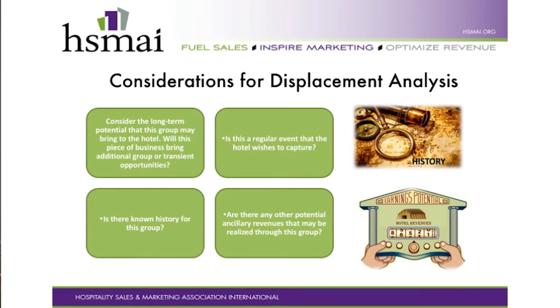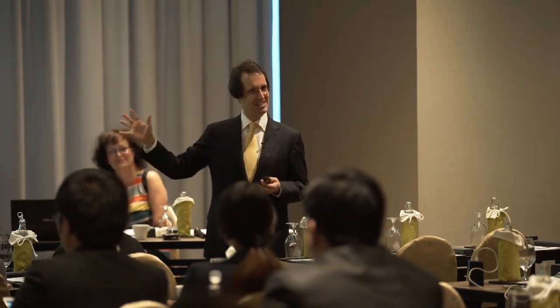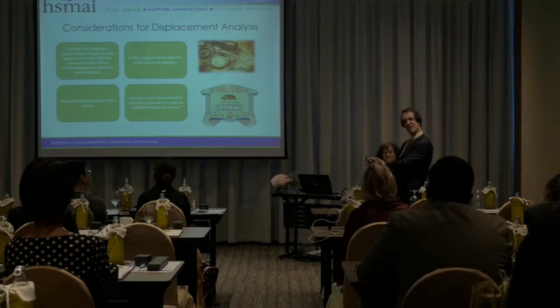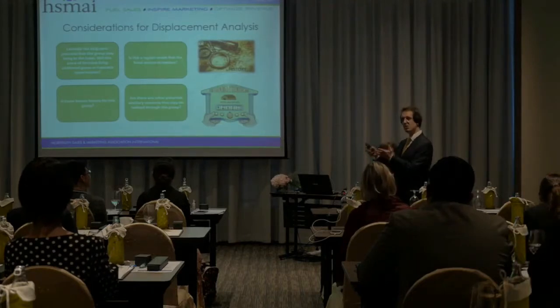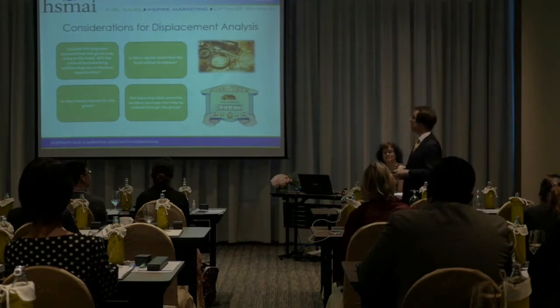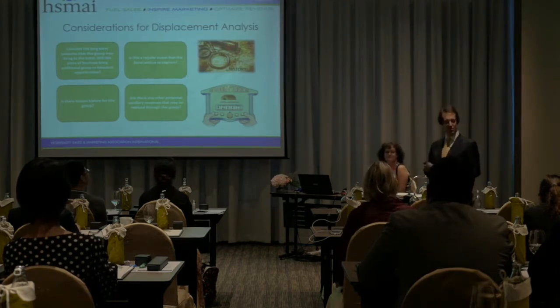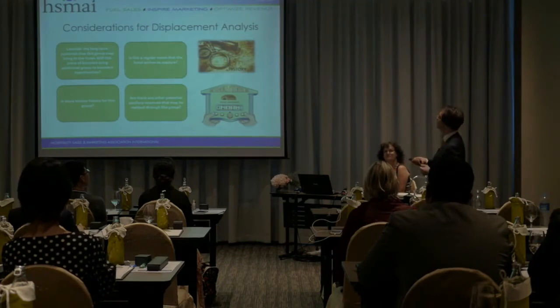Consider the long-term potential this group may bring to the hotel. Will this piece of business bring additional group or transient opportunities? When I was an on-property revenue manager, the sales team would always say: 'I know it's displacing, but this group will potentially book five or ten more times.' Sometimes that is actually correct — a piece of business where the calculation shows displacement of transient, but because of potential future business, maybe in low season, maybe regular business, we just accept that displacement.